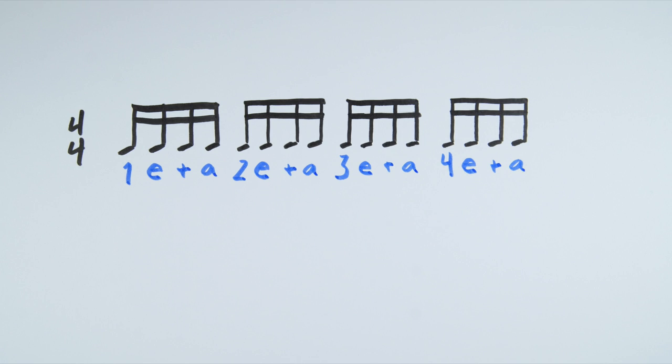So this measure of sixteenths would be counted like this: 1-E-and-A, 2-E-and-A, 3-E-and-A, 4-E-and-A.